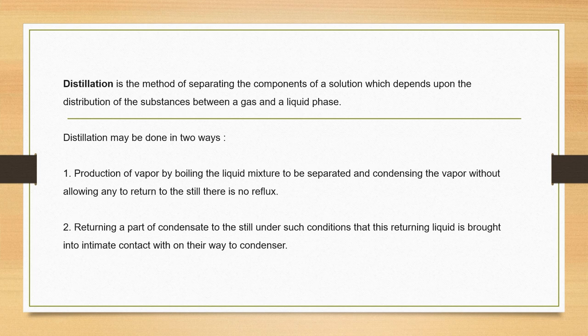If we talk about the ways in which distillation can be done, there are basically two methods. The first one being production of vapor by boiling the liquid mixture that we have to separate, and then we condense the vapor without allowing any reflux. The second method involves taking out a part of condensate to distill under such conditions, and then the returning liquid is brought into contact with the vapor condenser.